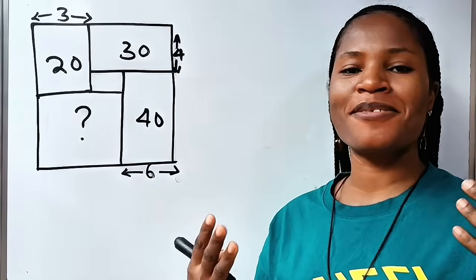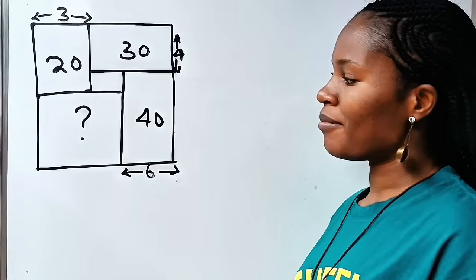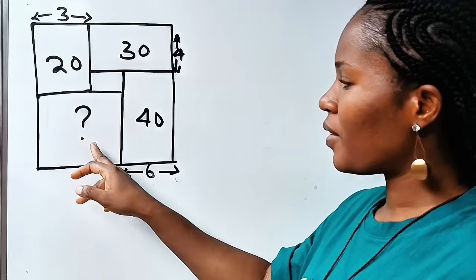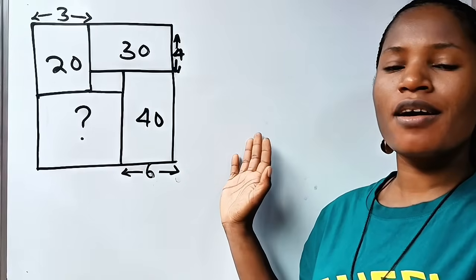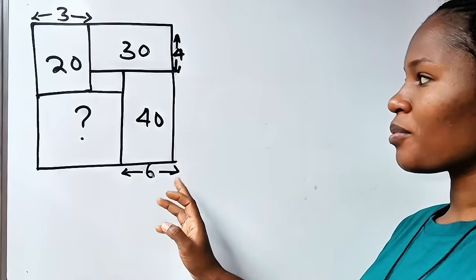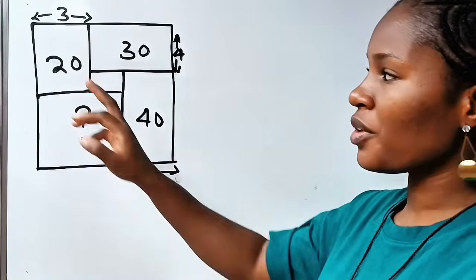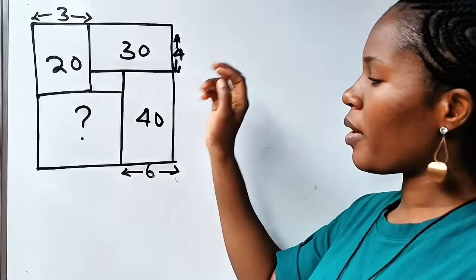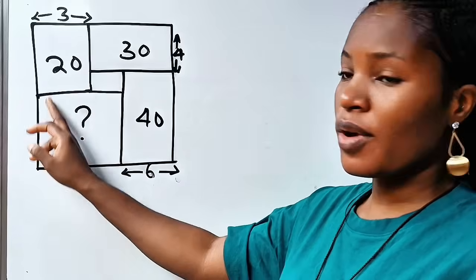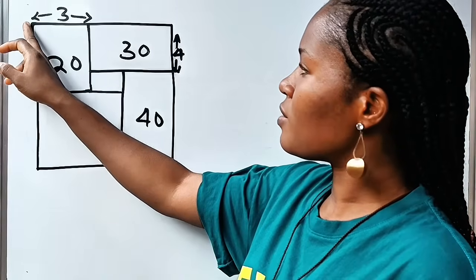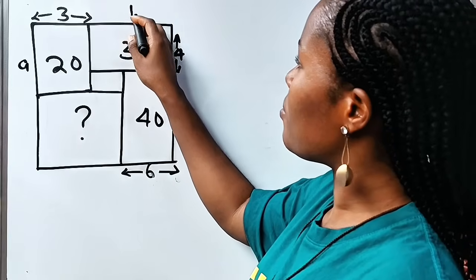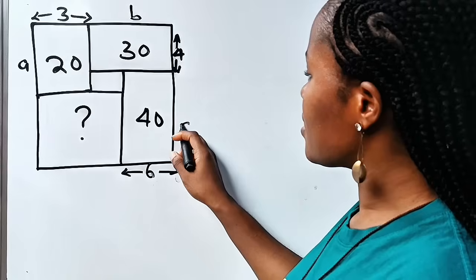Hi, you are highly welcome to my channel. Today we are asked to find the area of this place — this portion. This diagram is not drawn to scale. This is a square. What we are asked to find is a rectangle inside it. If we call the length from here to here 'a', from here to here 'b', and from here to here 'c'.